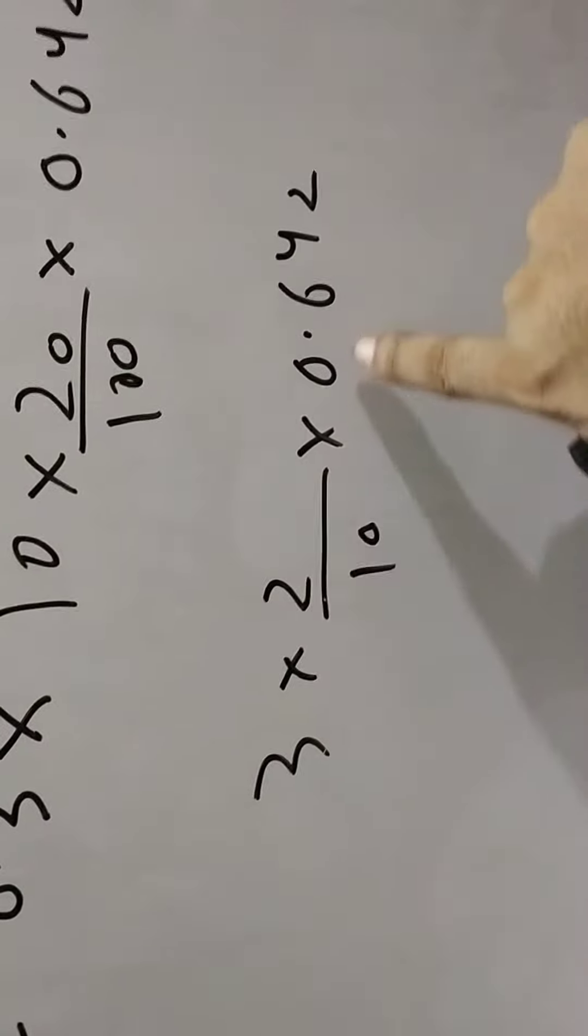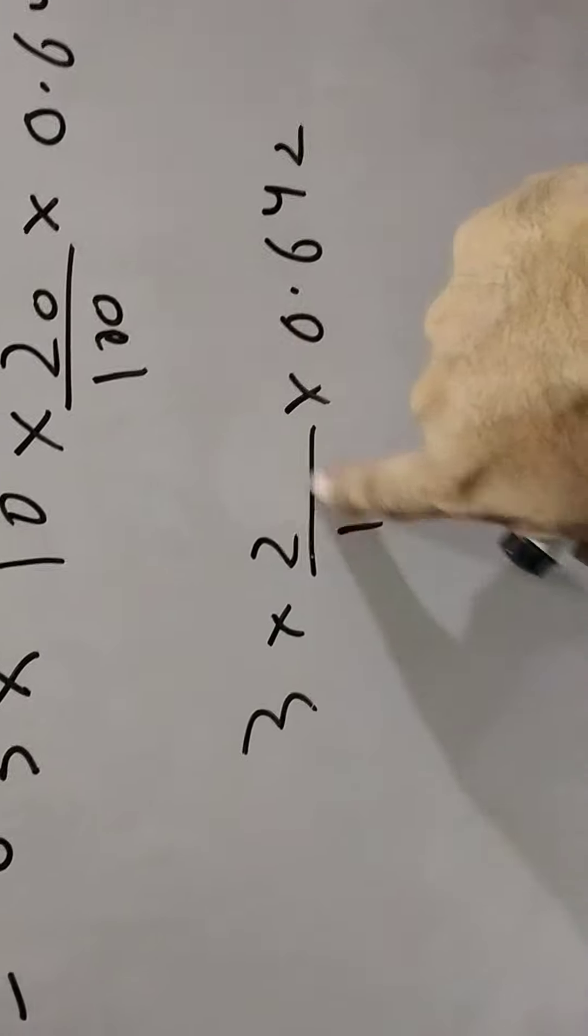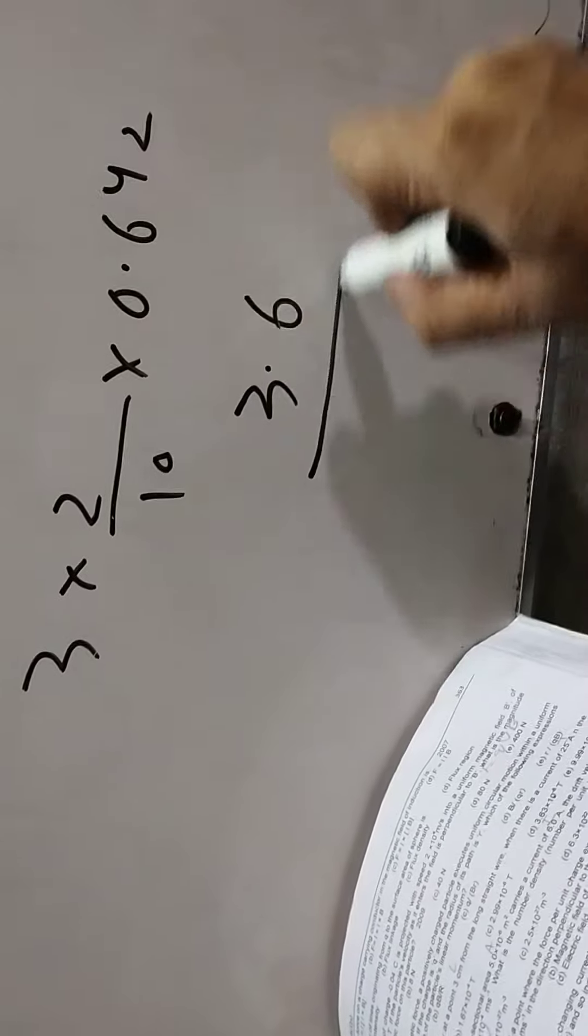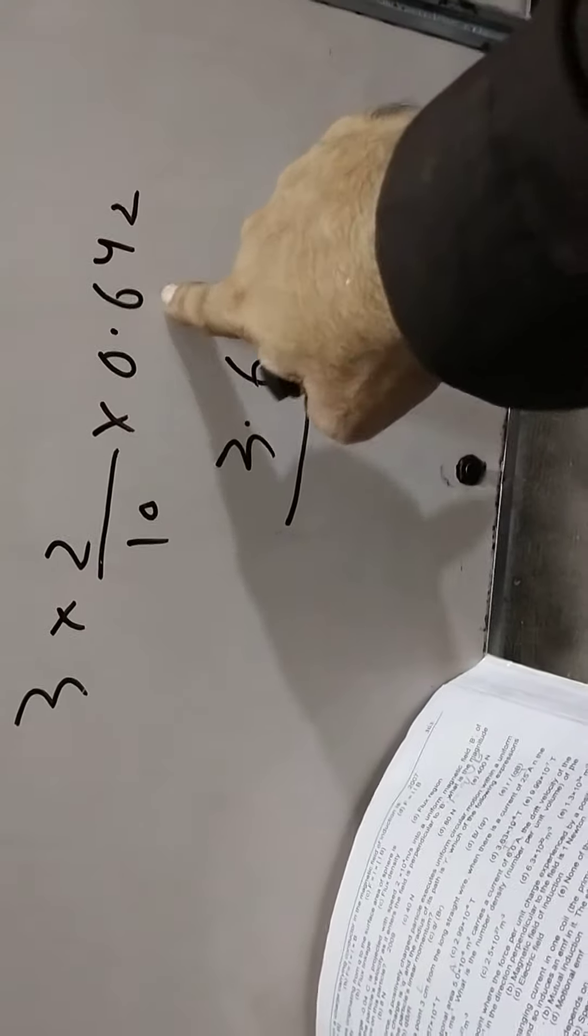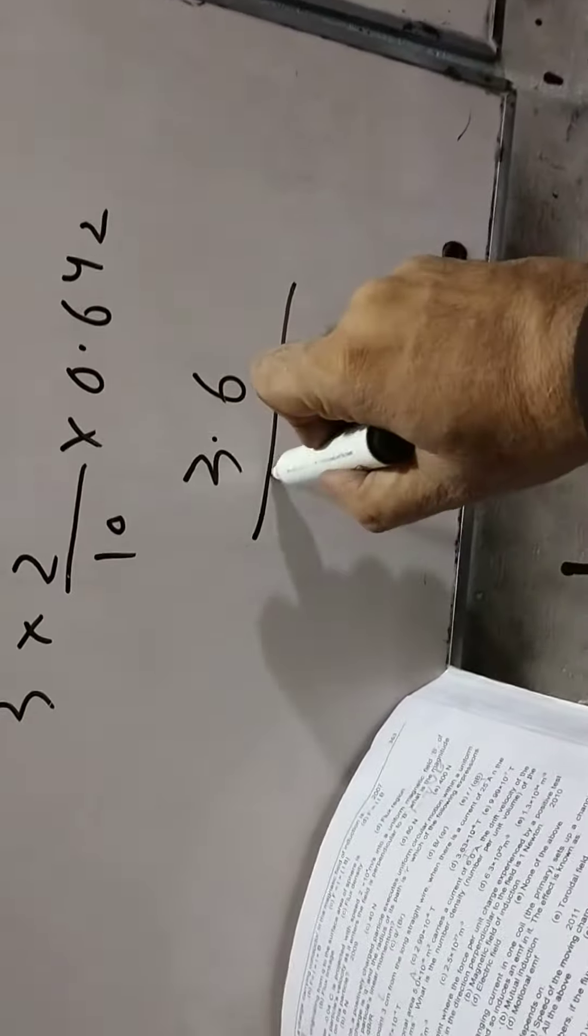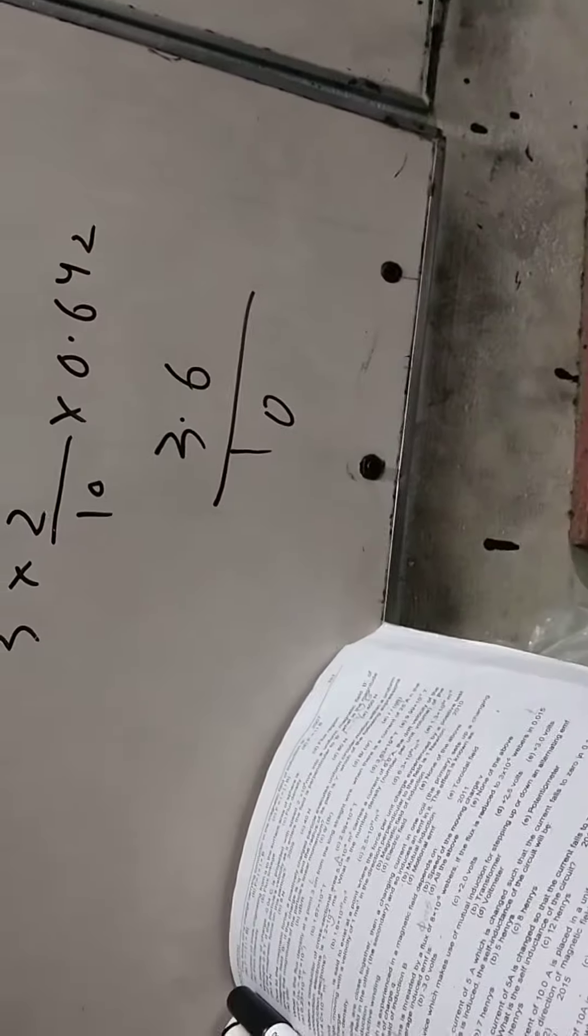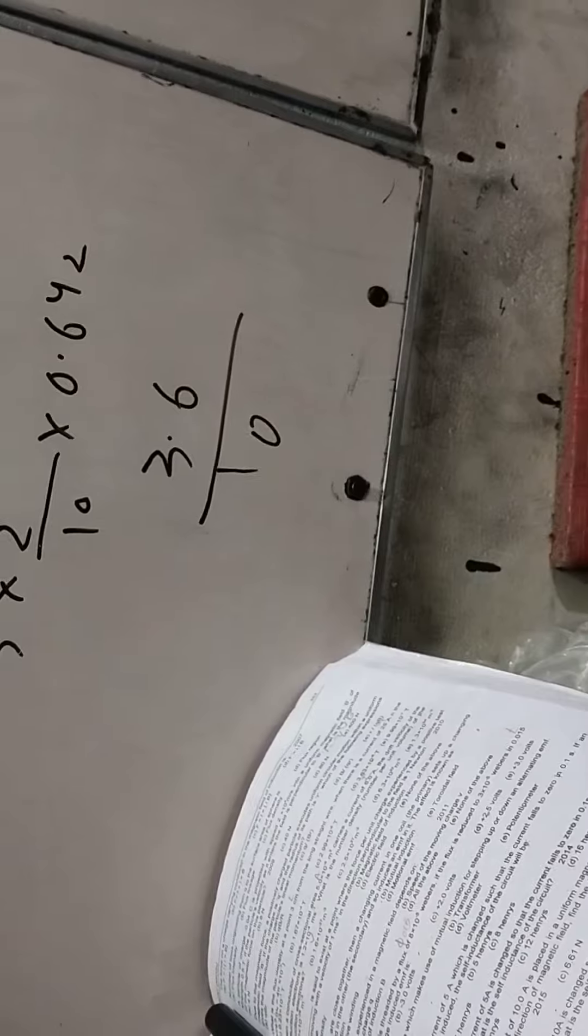3, 3 se 6. Bacho, 3 twice 6, 6 times 6 is 36 ho ta hai. 0.6 hai toh yeh takriban 3.6 se kuch bada, 0.6 se multiply karte hai. Lekin obviously bach kuch bada ho sakta, yeh like 3.8, 3.9 kuch aisa ho sakta hai.